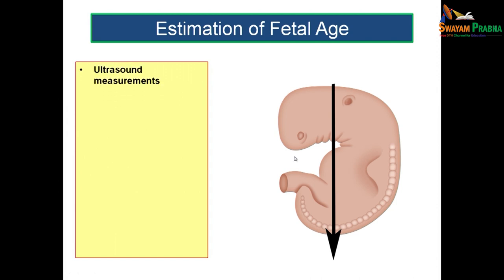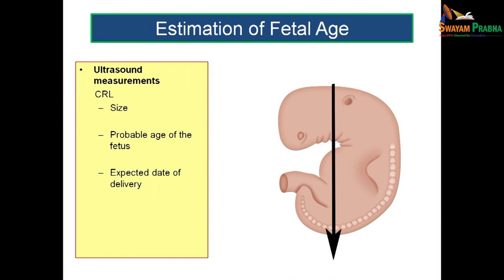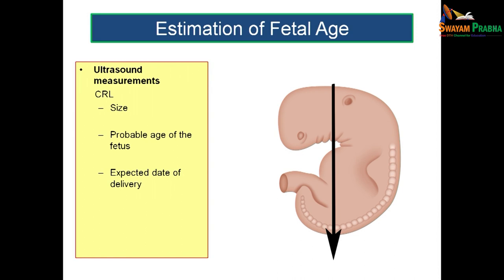Crown rump length and crown heel length are calculated with the help of ultrasound. CRL estimation helps you know the size of the fetus, the probable age of the fetus, and the expected date of confinement.